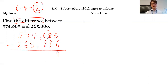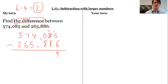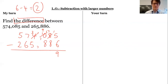Now 7 subtract 8 I can't do in this context, so I need some more tens. Normally I'd go to my hundreds column, but I've got no hundreds. So I'm going to need some more hundreds — I'll go to the thousands column, take 1,000, turn it into 10 hundreds. Now I can take one of those hundreds; I've got 900s left and turn it into 10 tens. Remember, I can't go straight from the thousands to the tens as that would give 107 instead of just 17. 17 subtract 8 is 9. 9 subtract 8 is 1.